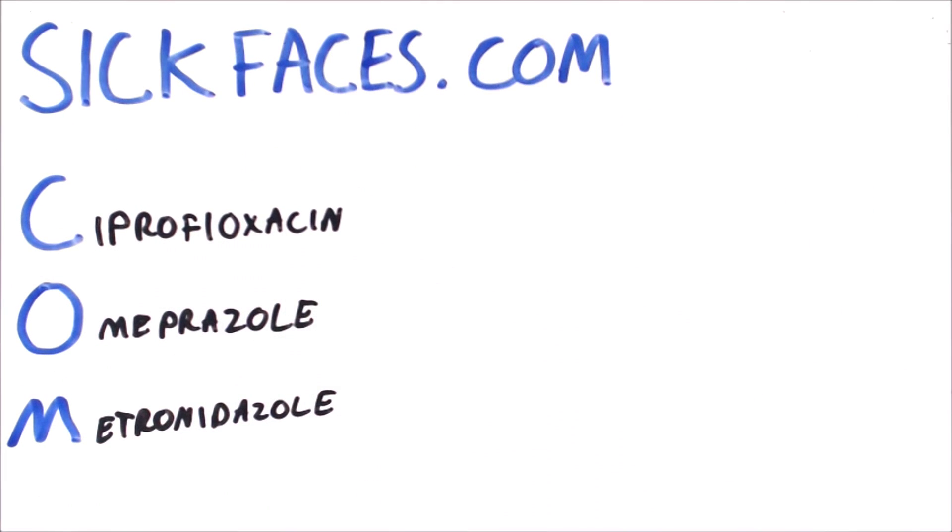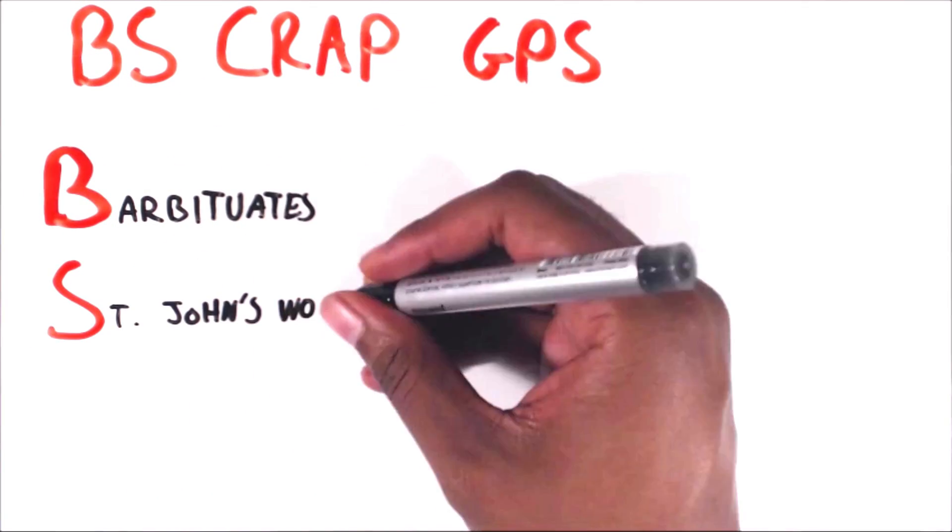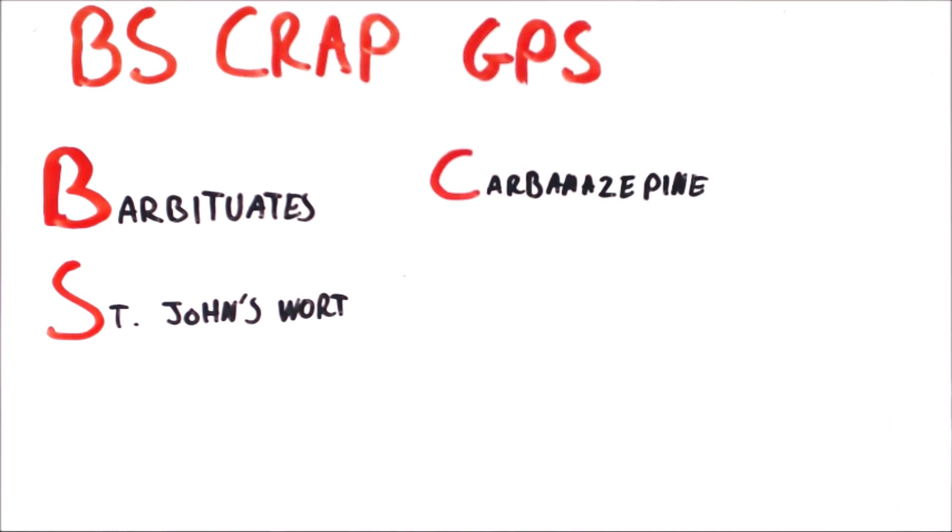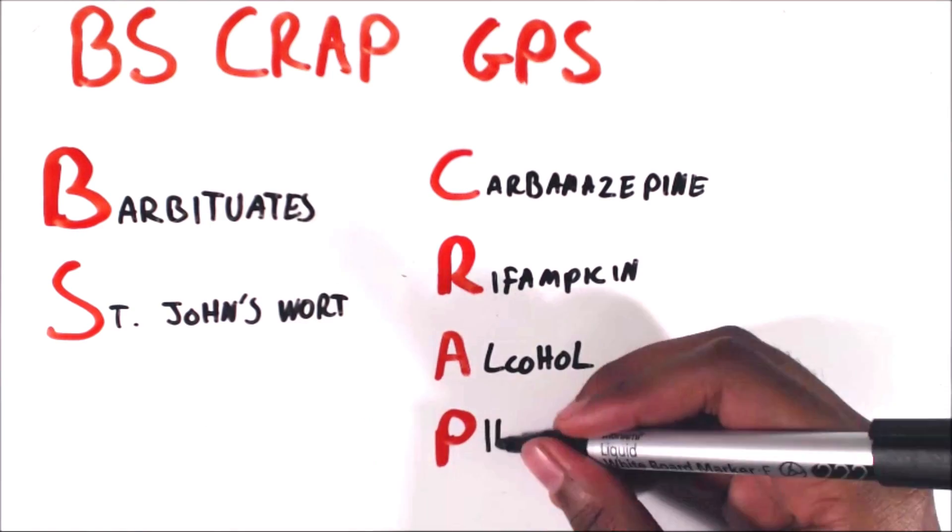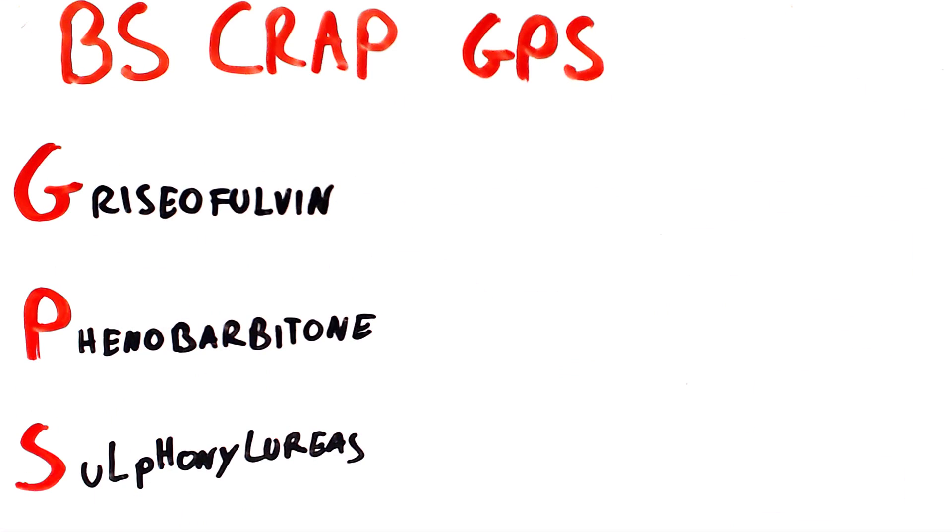A good way to remember the enzyme inducers is the mnemonic BS CRAP GPS INDUCES MY RAGE, which stands for barbiturates, St. John's wort, carbamazepine, rifampicin, alcohol, phenytoin, griseofulvin, phenobarbital, and sulfonylureas.